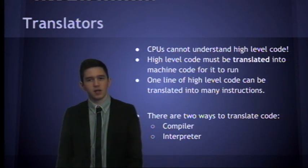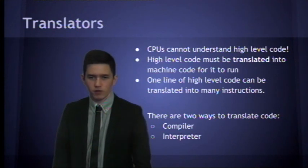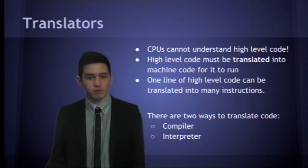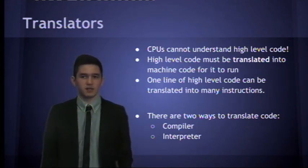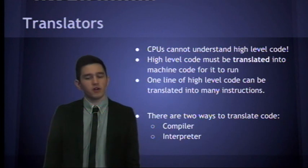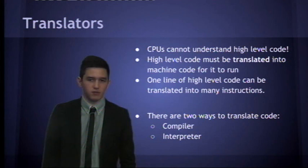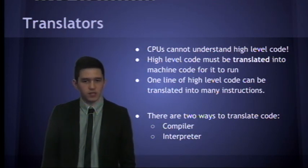To talk about translators. First of all, CPUs can only understand the machine code binary. When we write in high-level code, we've got to translate that into machine code, so the computer can understand it. One line of code, of high-level code, will be translated into many lines of machine code. And there's two ways we can translate it, using a compiler or an interpreter.